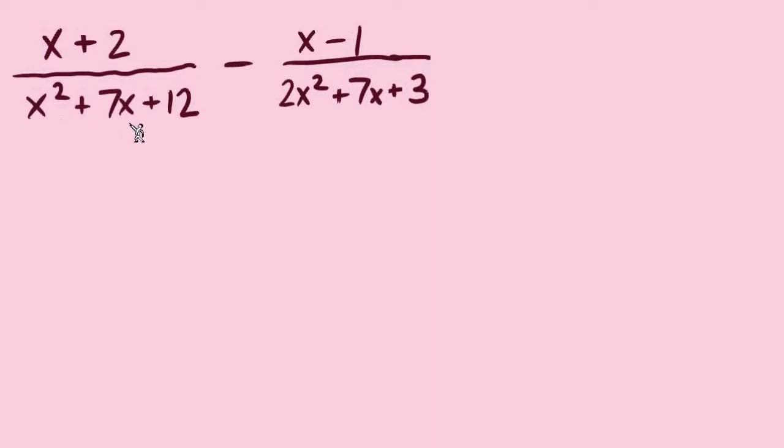First, x squared plus 7x plus 12 factored is x plus 3 times x plus 4.